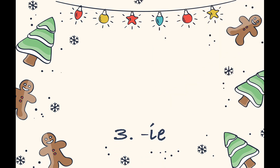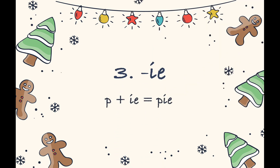Third is I. For example, pie: P, I — pie. T, t, i — tie.